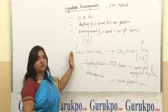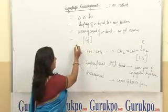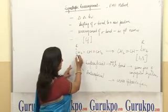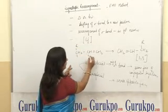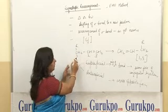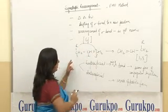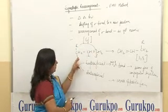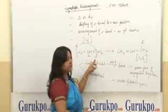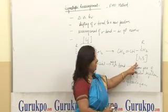Here is an example of a Sigmatropic Rearrangement. R, which is any alkyl group, is numbered 1, 2, 3. This R is present at carbon 1 and shifts to the 3rd position. So the shifting occurs from carbon 1 to carbon 3 — that is why it is called a 1,3-Sigmatropic Rearrangement.